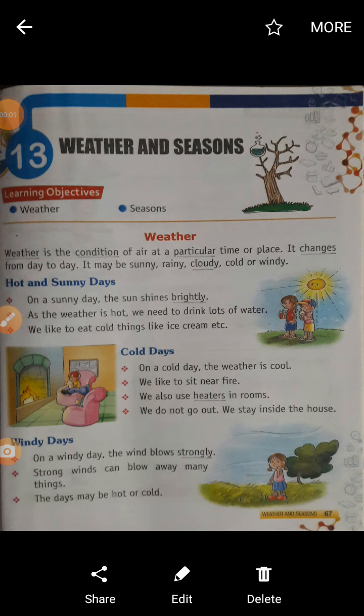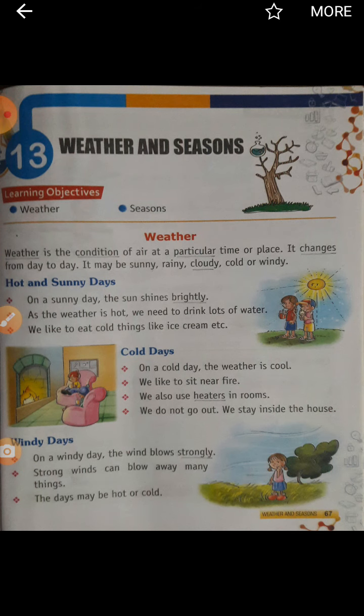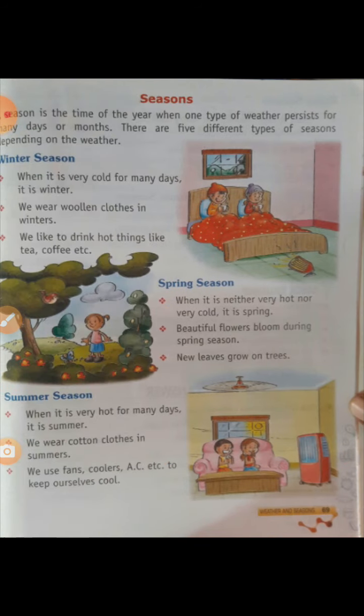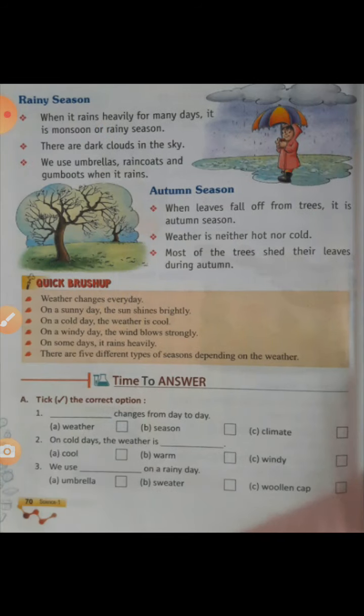Today I am going to explain Lesson 13: Weather and Season, page number 70. First time reading this page. Rainy season — when it rains heavily for many days, it is monsoon or rainy season. There are dark clouds in the sky.